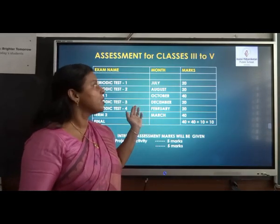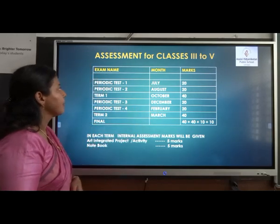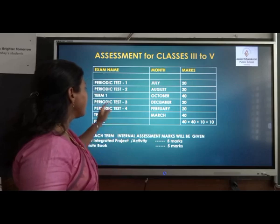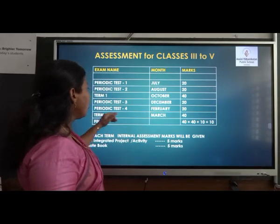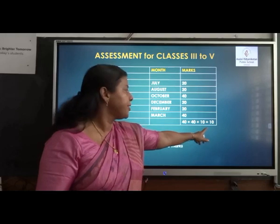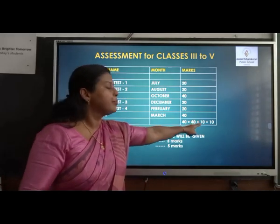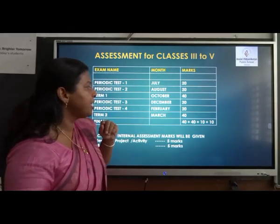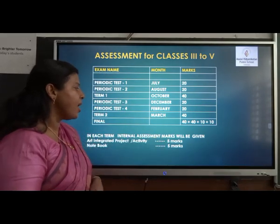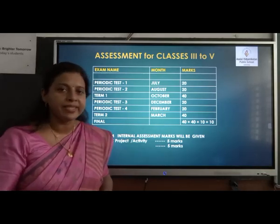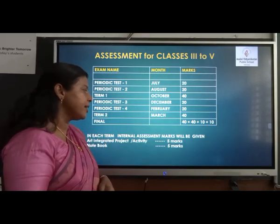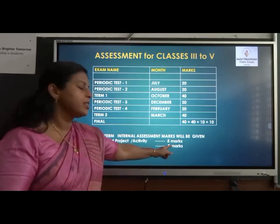This is how the assessment for classes 3 to 5 works. For each term you have 2 periodic tests, each out of 20 marks, and the terminal exam is out of 40 marks. The second term also has 2 periodic tests and a terminal exam out of 40 marks, and when you add all these up it comes to 100 marks. The periodic test marks have been brought down to 10, making a total of 40 marks brought down to 10 in each term. Internal assessment marks will be given for an art integrated project, newly added by CVSE, with 5 marks for that cross-discipline project spanning different subjects, and another 5 marks for notebook correction.